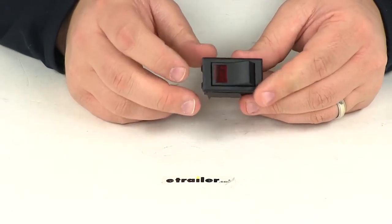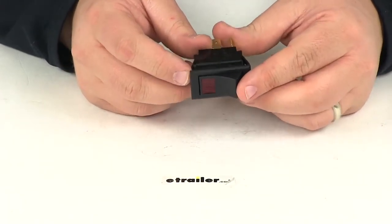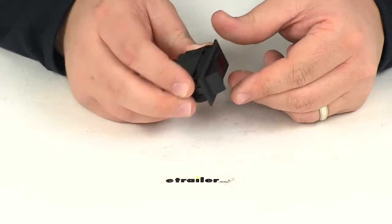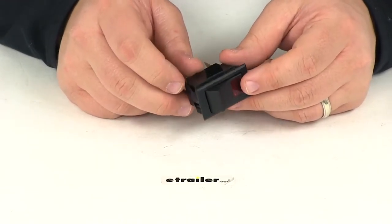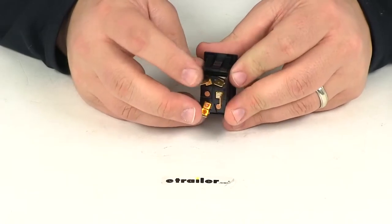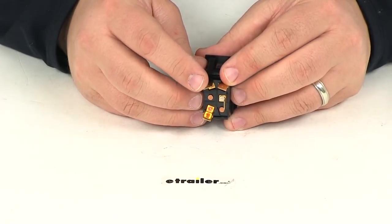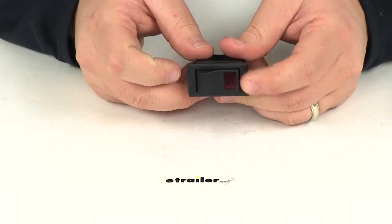It features a snap-in mounting design. You can see it has these tabs on top that are pushed down, and once it gets inside the mounting location, they expand back out, which holds the rocker switch in place. It's got that nice snap-in mounting feature.